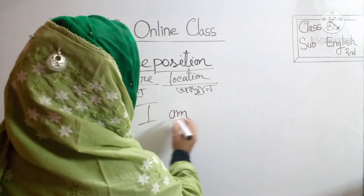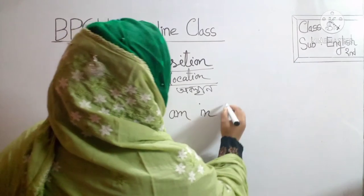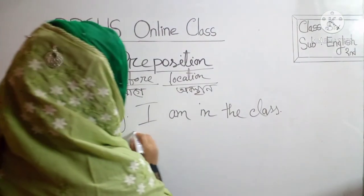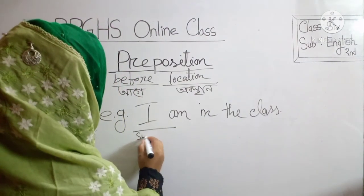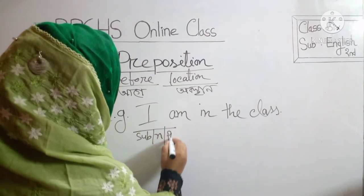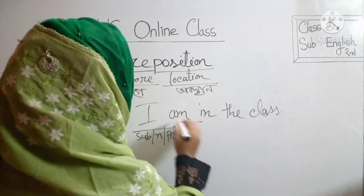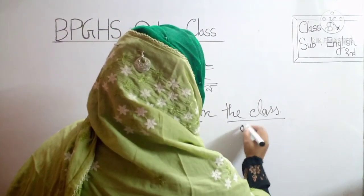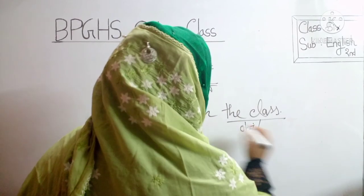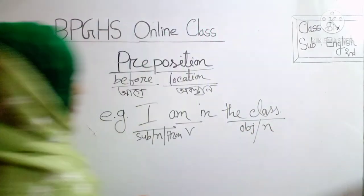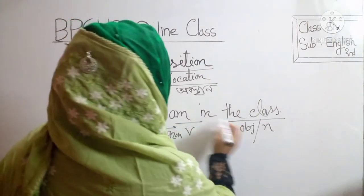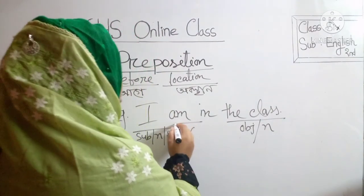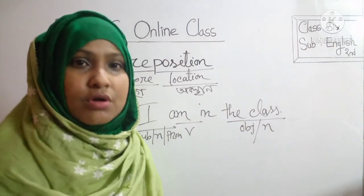I am in the class — এই বাক্যে দেখো, আমাদের কী আছে? Subject আছে, এবং subject কী? 'I' অথবা pronoun। এর পরে কী আছে? 'am' — এটা কী? Verb। তারপর দেখো 'the class' — এটা কী? এটা হচ্ছে object। এখন দেখো, যদি আমরা বলি 'I am the class' — এটার কোনো অর্থ হলো? সুনির্দিষ্ট অর্থ প্রকাশ পেলো?